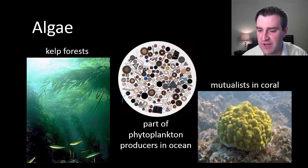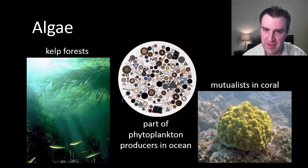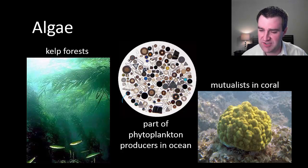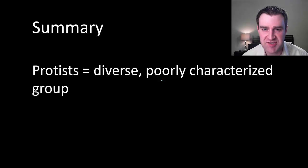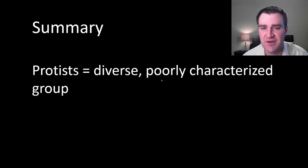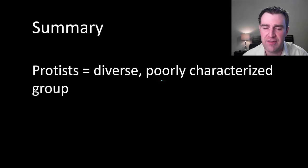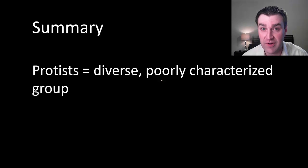Many species of algae work symbiotically with animal coral — the algae feed the coral and the animals give them a home — and that serves as an important part of coral ecosystems. So we've tried to summarize some important protists, but really what I want you to take away from this video is just how poorly characterized they are and that their classification is really a work in progress in biology.